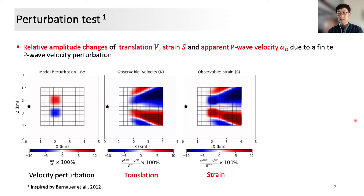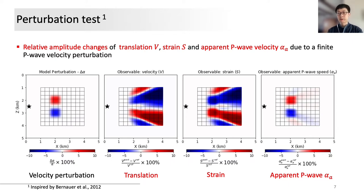For velocity, the relative amplitude changes are more averagely distributed along the traveling paths. Strain measurements show a similar pattern but with sharper boundary of the perturbations. For the ratio-based apparent P-wave velocities, the propagation effect has been mostly removed and the pattern of relative amplitude changes agree well with the true velocity perturbations. In general, the finite response of each observable is consistent with the sensitive kernel shown before.